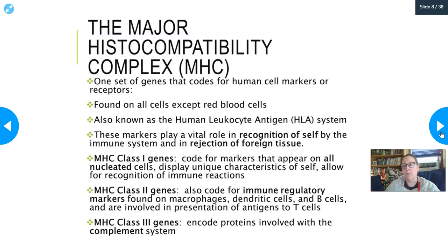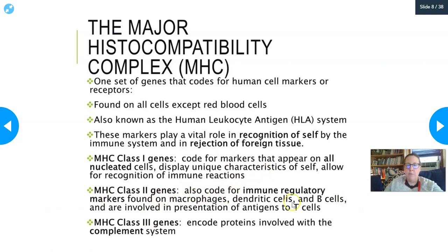MHC class one genes code for markers that appear on all nucleated cells — red cells lack nuclei and therefore don't have them. These markers display the unique characteristics of self and allow immune recognition. MHC class two genes code for immune regulatory markers found on macrophages, dendritic cells, and B cells, and they're involved in the presentation of antigens to T cells. Class three genes encode proteins involved in the complement system.